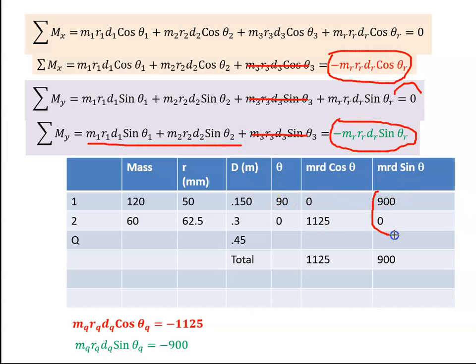So what it's saying is when I add these values, when I add these two values, I will get the negative of MR D sine theta R, which means MR in this case we're talking about Q. We're talking about plane Q. So the MQ RQ DQ cosine theta Q is 1125, minus 1125 because that's a positive answer, and it's minus 900 in the vertical plane.